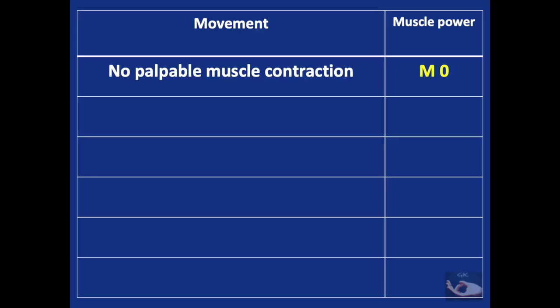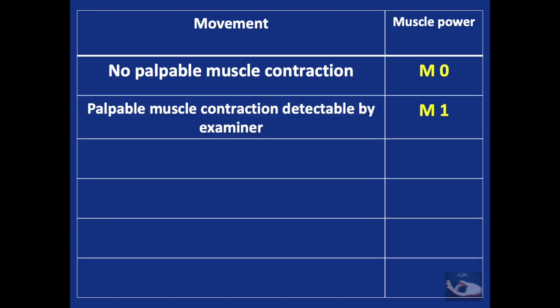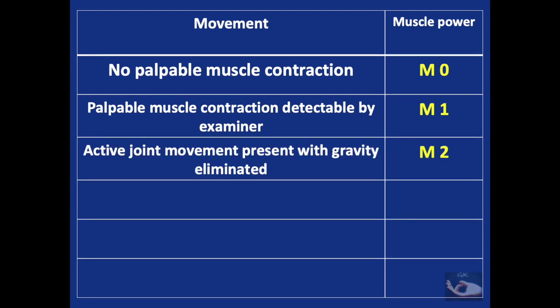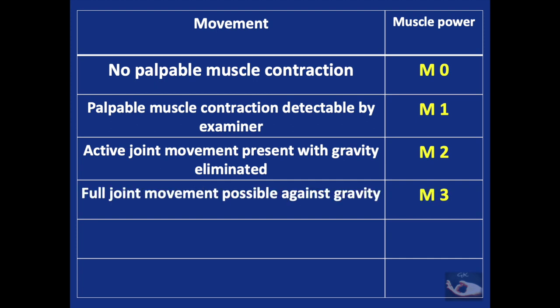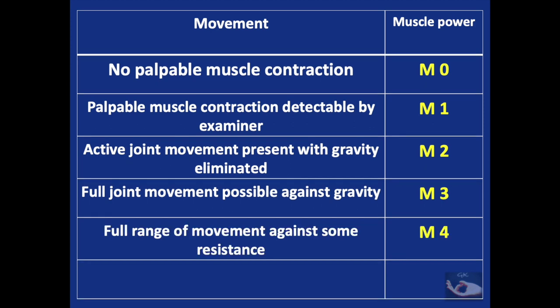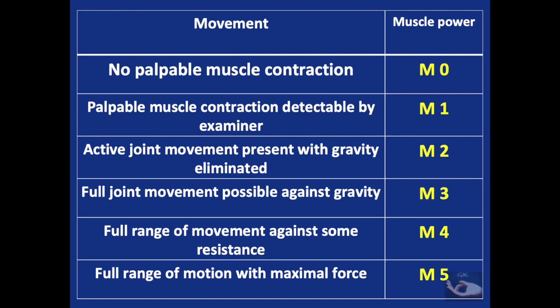Before testing muscles, we need to know about muscle power grading. No muscle contraction is M0. Palpable muscle contraction detectable by the examiner is M1. Active joint movement present with gravity eliminated is M2. Full joint movement possible against gravity is M3. Full range of movement against some resistance is M4. And full range of motion with maximal force is M5.